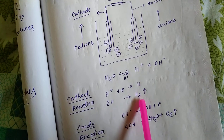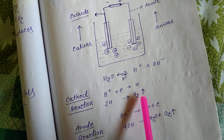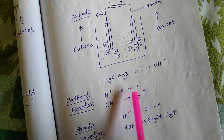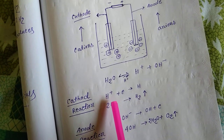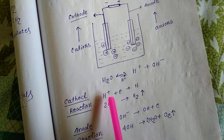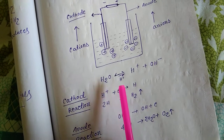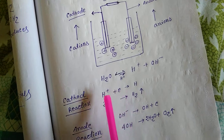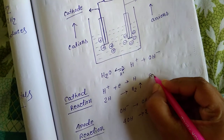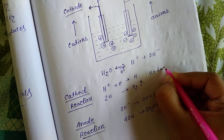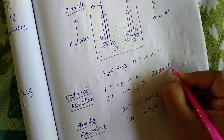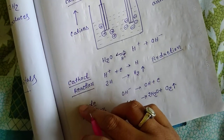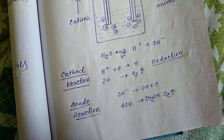So hydrogen gas is produced at the cathode. H⁺ cations abstract electrons at the cathode — abstraction of electrons occurs here — so this is reduction. In the cathode, reduction takes place.